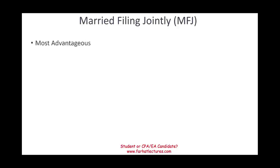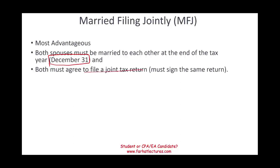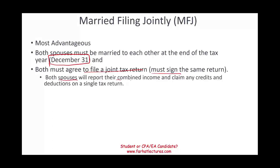Married filing jointly is the most advantageous status. Both spouses must be married to each other at the end of the tax year — as of December 31st. Even if you got married on December 31st, you qualify. Both spouses agree to file a joint return, signing the same return, and they report their combined income and claim any credits and deductions on a single tax return.